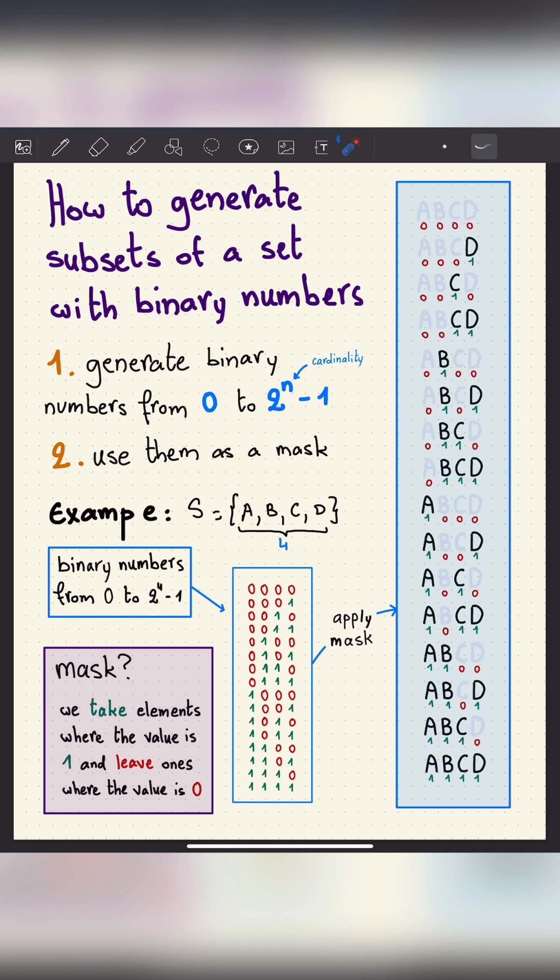the result. For example, here the mask is 0101, so we take the second element and the fourth one. By doing so with all binary numbers, we get all 2^n subsets of our set {A, B, C, D}. That's how we generate subsets of a set with binary numbers.